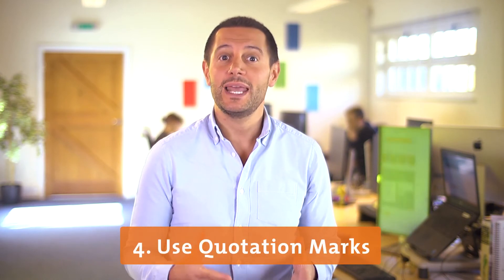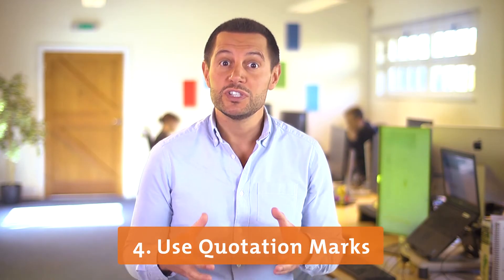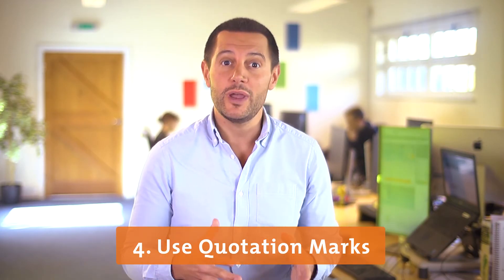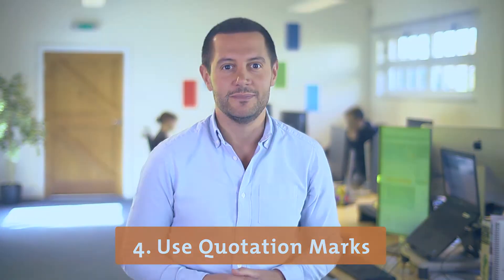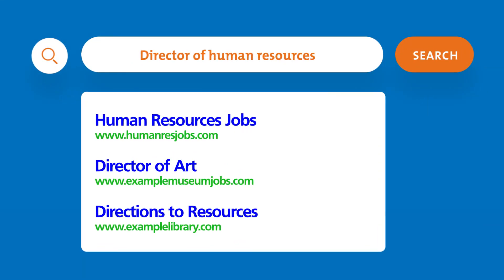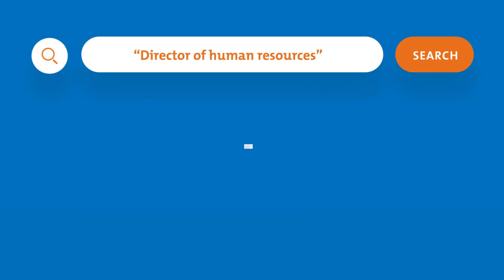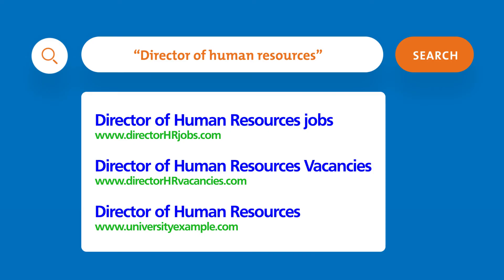Narrow down your search by placing quotation marks around it. This will return results for only the word or phrase that you type in. For example, if you search for the job title 'director of human resources' without quotation marks, your search will return results based on all the words in that phrase, including 'direct' or 'directions'. But by putting quotation marks around it, you'll get results for that phrase only.